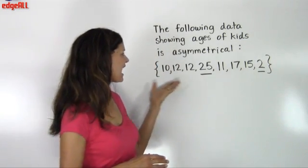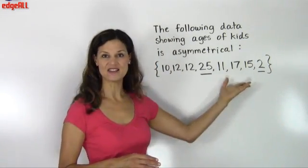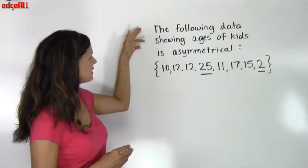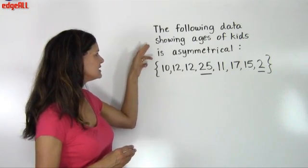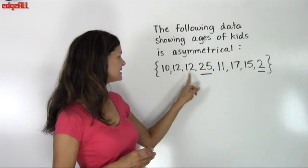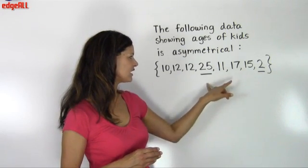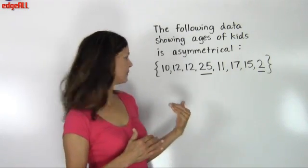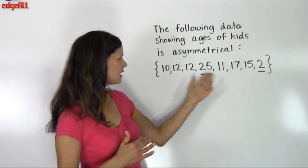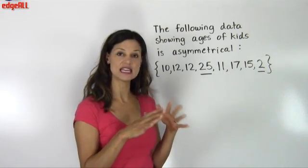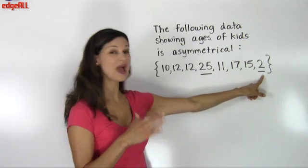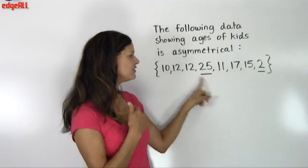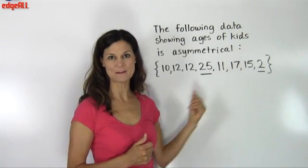Here on the board behind me, I have an example of a set of data that would not be a very good set for using mean. The following data showing ages of kids is asymmetrical, meaning I have two numbers that are way higher or way lower than most of the numbers. So 10, 12, 12, 11, 17, and 15 are generally near each other, but 2 is way, way lower than those numbers, and 25 is so much higher that this set would not be good for calculating mean.